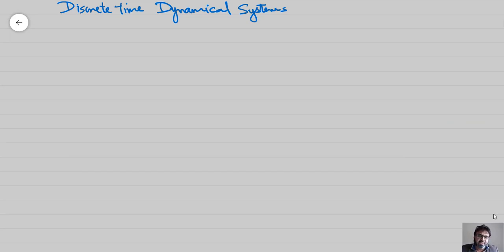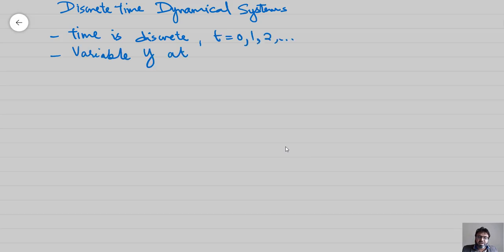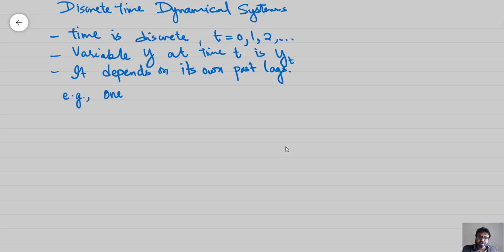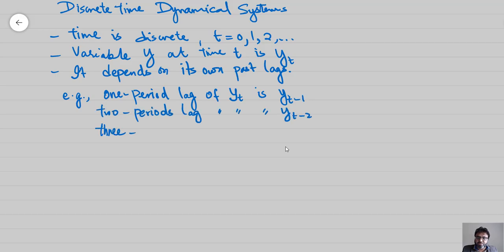Let us start with discrete time dynamical systems. Time is discrete, so t = 0, 1, 2, and so on. We have variable y at time t, denoted y_t. It depends on its past lags: one lag is y_{t-1}, two periods back is y_{t-2}, three periods back is y_{t-3}, and for n periods the lag is y_{t-n}.